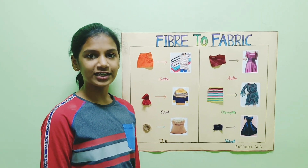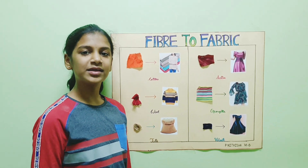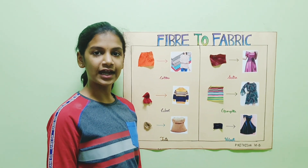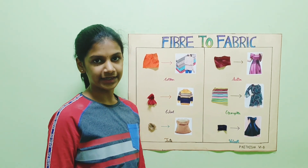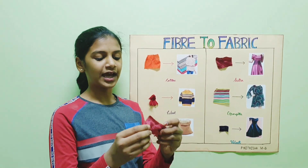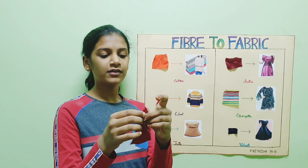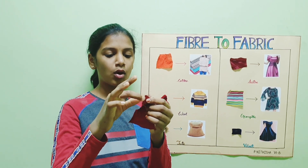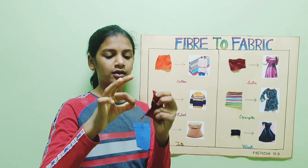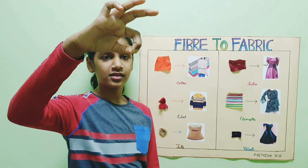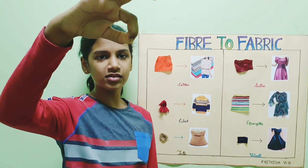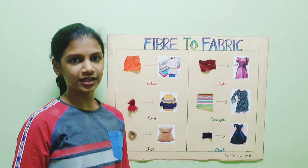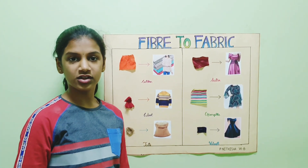So now let us see what is fiber. Fiber is a thin thread-like strand from which clothes are made. For example, I took a small cloth. From this, let us pull a small strand of cloth. See, this is called fiber. So now let us see what is fabric.